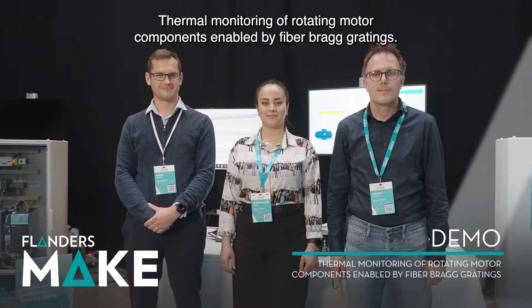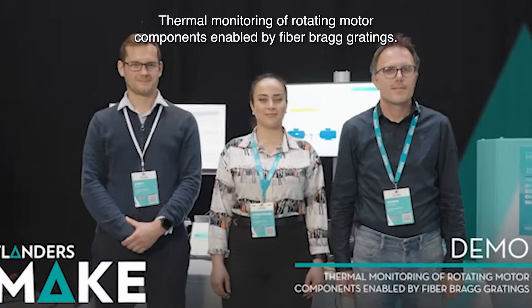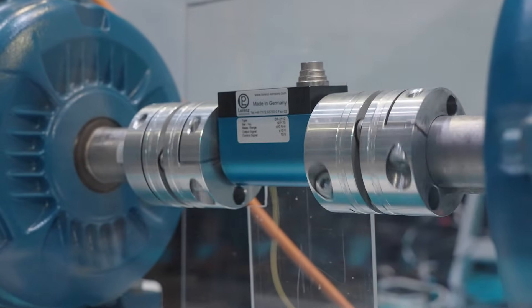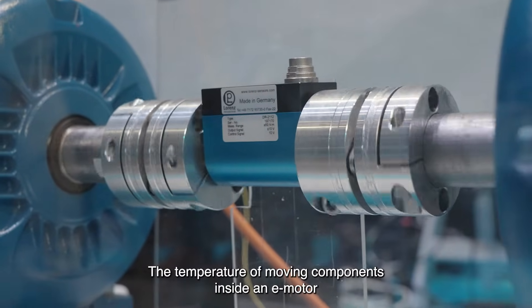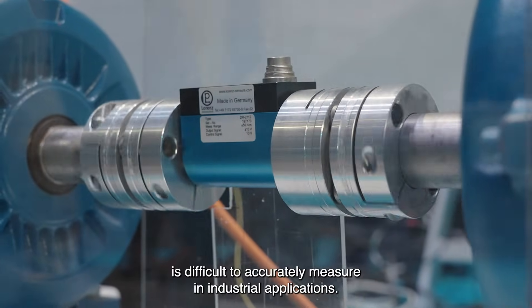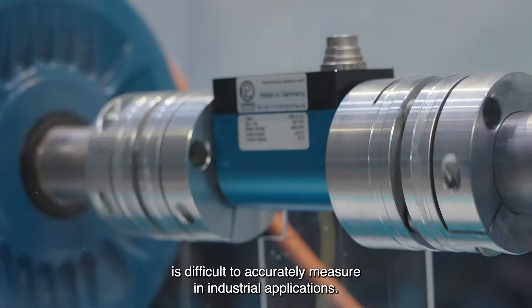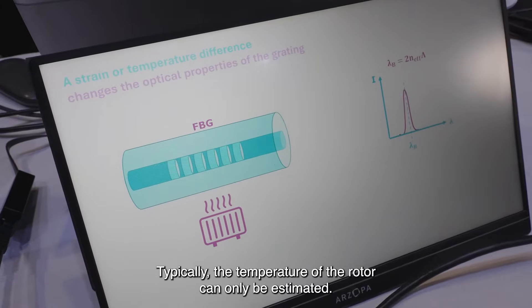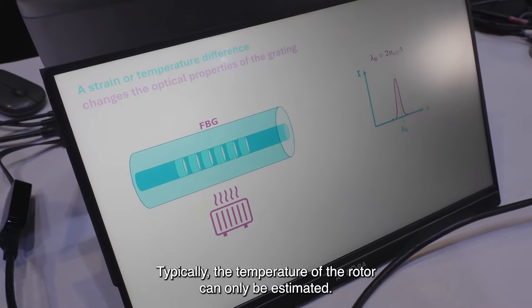Thermal Monitoring of Rotating Motor Components Enabled by Fiber Bragg Gratings. The temperature of moving components inside an e-motor is difficult to accurately measure in industrial applications. Typically, the temperature of the rotor can only be estimated.